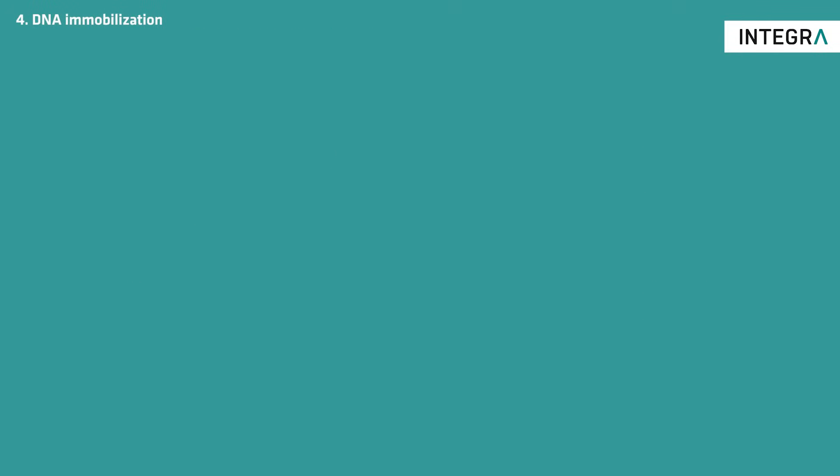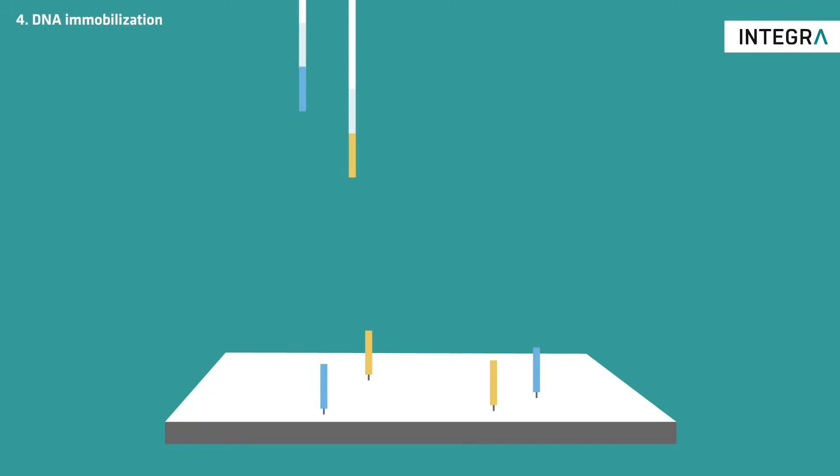Your sample is added to the Illumina flow cell, which has been pre-spotted with short DNA sequences that are complementary to the capture sequences attached to your DNA sample, and consequently bind your sample sequences.